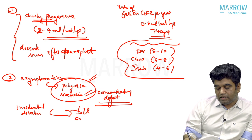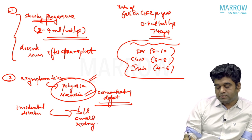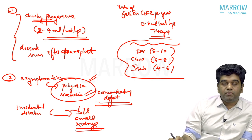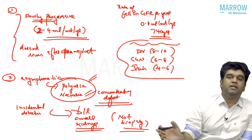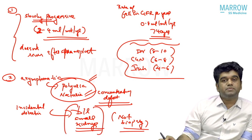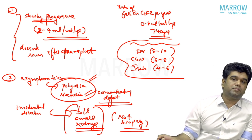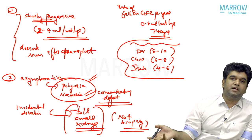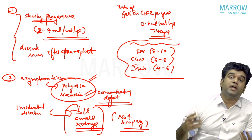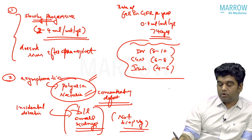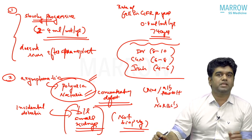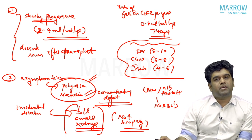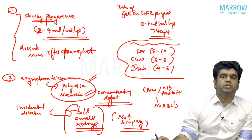Incidental detection while doing ultrasound for something else is very common in CTID. When detected incidentally, bilaterally small kidneys are seen. If you see bilaterally small kidneys without any particular cause, think CTID — biopsy is unlikely to yield useful results from a small kidney. On urine examination, albumin may be at most trace to 1+, no deposits, no RBCs — a bland urine sediment. Bilaterally small kidneys plus bland urine sediment without major symptoms fixes the diagnosis of CTID.